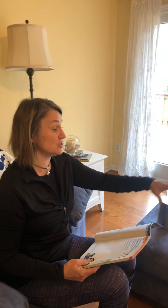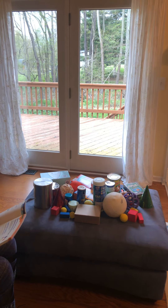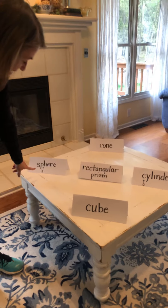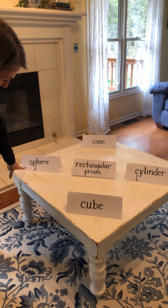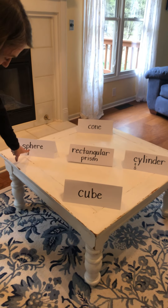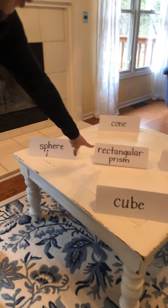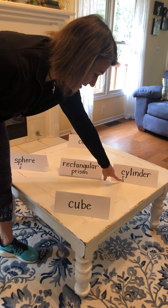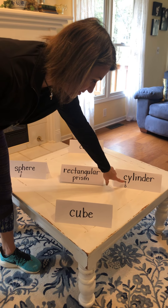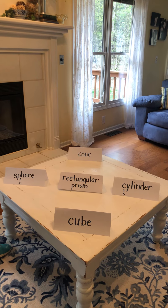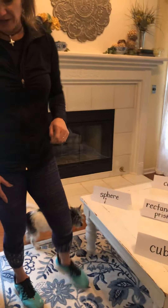Three dimensional shapes are shapes that you can actually pick up. There are five three dimensional shapes we're going to be working on today. We'll be talking about cubes, spheres — I put a little F down here to help you remember that SPH sounds like an F — rectangular prisms, cylinders — the C has the soft S sound, so cylinder sounds like an S — and cones.